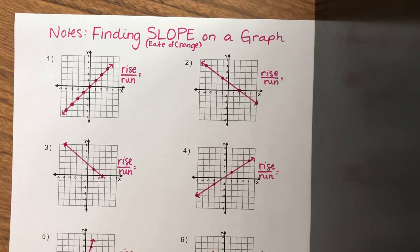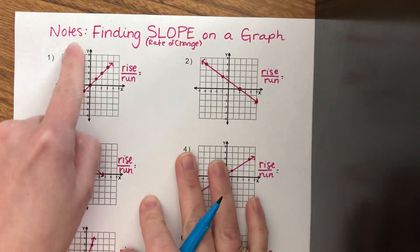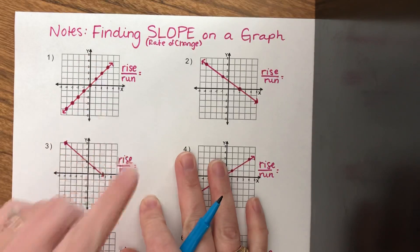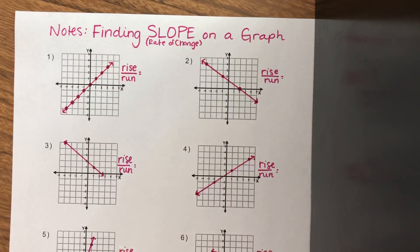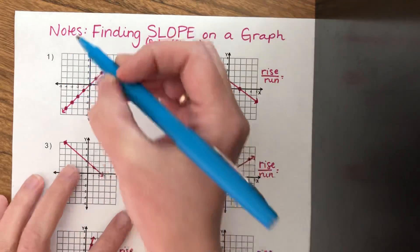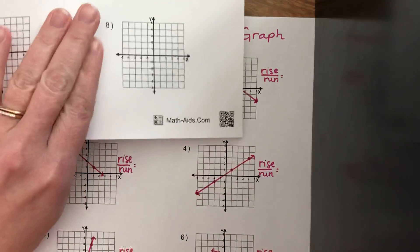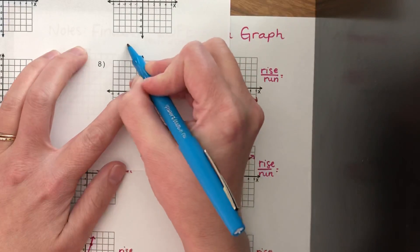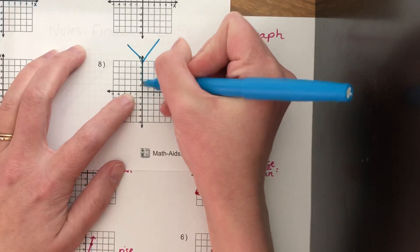We know that slope is rise over run. Rise is your y-axis, which goes up and down, and run is your x-axis. If you have trouble remembering the y-axis, the y-axis you can actually make into the letter y.